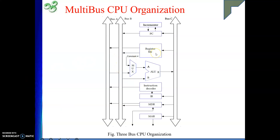Next comes the register file. Here we have our registers as a single file, due to advancement in VLSI technology, implementing general purpose registers R0, R1, up to R(n-1). From this register file, there are three connections — three ports: two ports for output and one port for input. In the same clock cycle, from two registers, content can be placed onto bus A and bus B, and at the same time, from bus C, we can load content into another register. These three communications can take place simultaneously in the same clock cycle because there are three sets of wires.